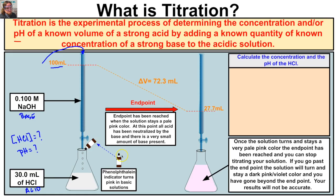Next, we add a few drops of an indicator — in this case, phenolphthalein. Phenolphthalein turns pink in basic solutions. Normally, hydrochloric acid is clear and sodium hydroxide solution is also clear. However, phenolphthalein added to our hydrochloric acid will stay clear. We then add sodium hydroxide to our acid drop by drop, and we'll notice the solution turns pale pink as we're adding base. We swirl the Erlenmeyer flask until the pink disappears and it's clear again.